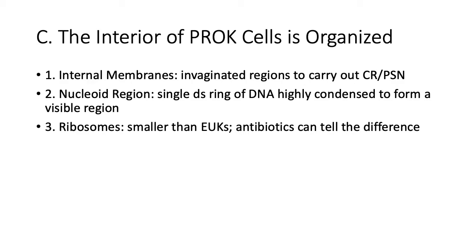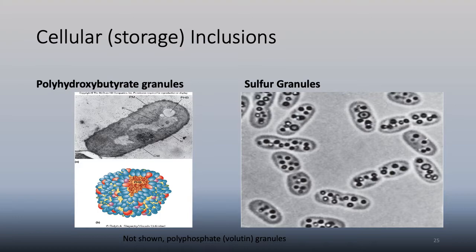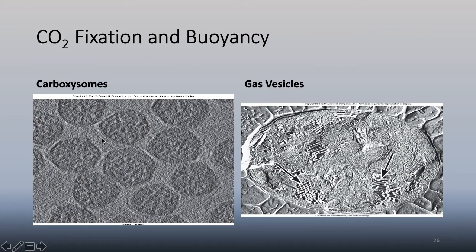Some bacteria have unique internal structures. Polyhydroxybutyrate granules store types of gases. Other bacteria store sulfur as dots you can see under the microscope, using sulfur as their inorganic energy source. Some prokaryotes are carboxysomes that fix CO2, and they have gas vesicles for buoyancy - they function like submarines, adjusting depth based on nutrient availability.